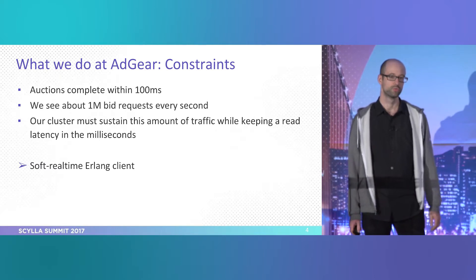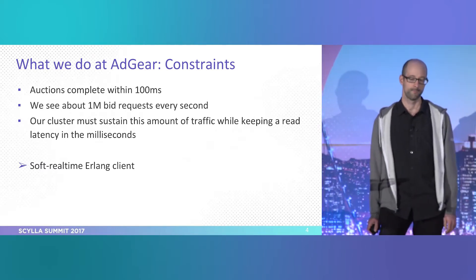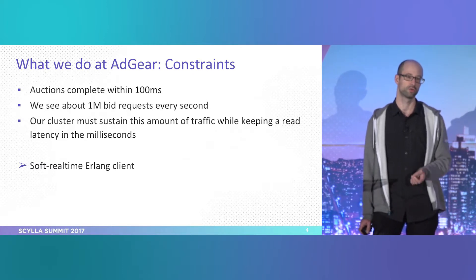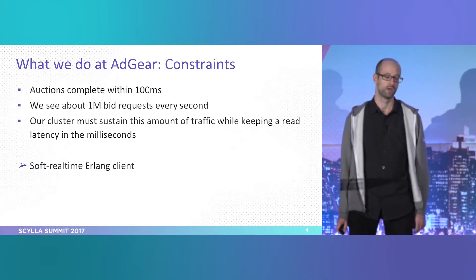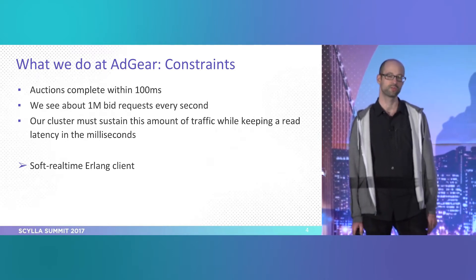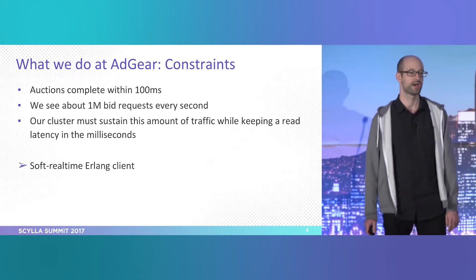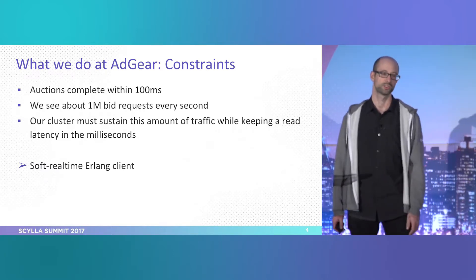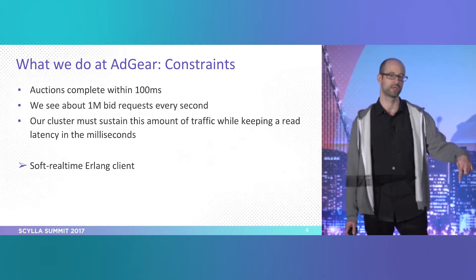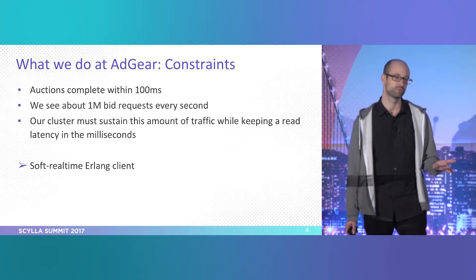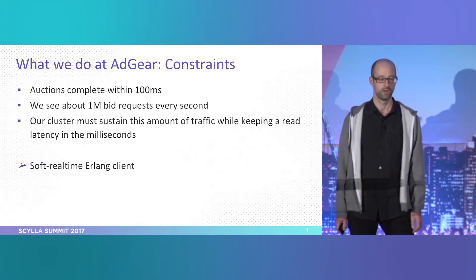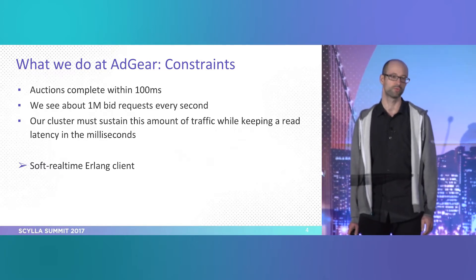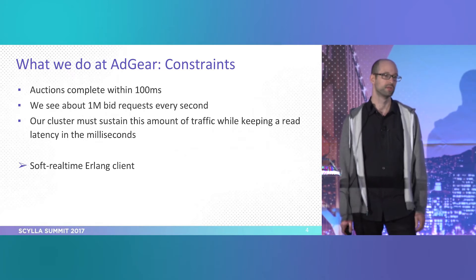In our case, we do web and mobile. We see one million of those bid requests per second, and we have to decide quickly enough whether we want to participate in a given bid. That 100 milliseconds is an estimate — it varies by exchange and how close or far we are. So if we spend 10 milliseconds on the wire communicating with the exchange, that's less time we have to reach a decision. The most important measure for us using a database is read latency.